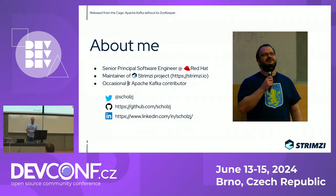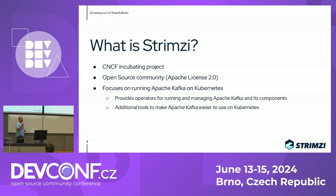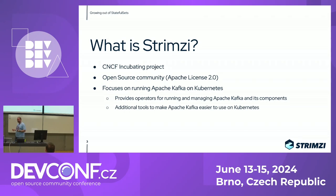I hope you all heard about Apache Kafka — the leading data streaming and event streaming platform. I hope you also heard about Strimzi. Strimzi is a CNCF incubating project, open source with an Apache 2.0 license. We focus on running Apache Kafka on Kubernetes by providing a set of operators for running all the different Kafka components, but also for managing topics and users.